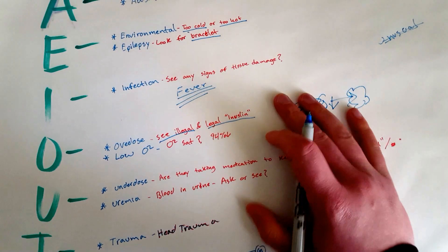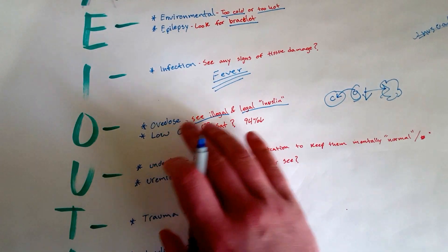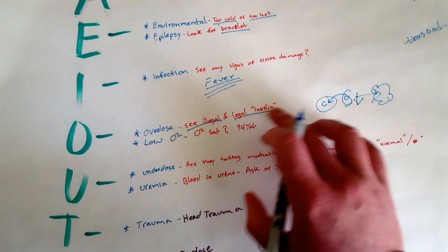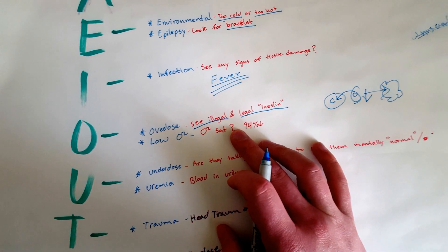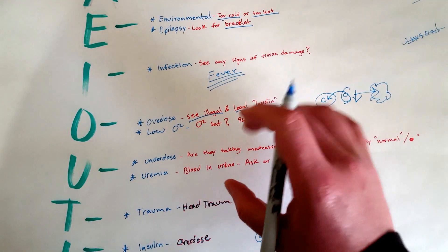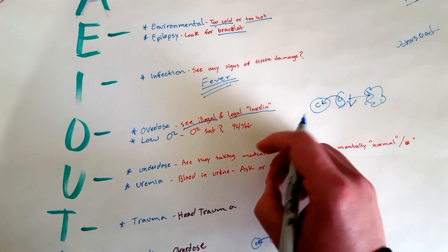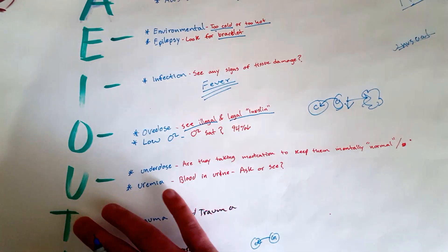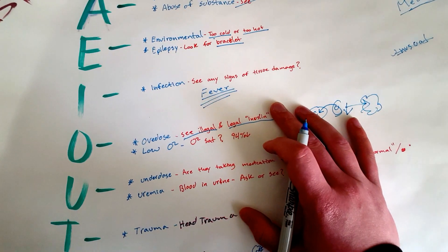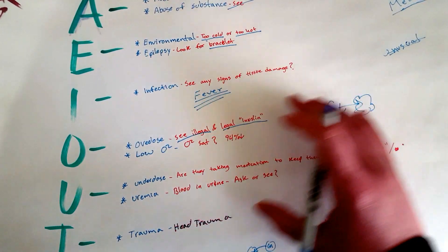So overdose of both illegal and legal drugs. Low oxygen: the only real way to know if your patient has low O2 sat is by putting an O2 sat on your patient. Check that—that might actually be an issue. Also, if they were in a confined space when you got to them and they're combative for no reason at all, that could be an issue.